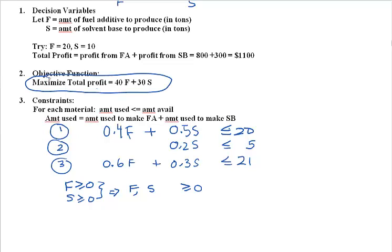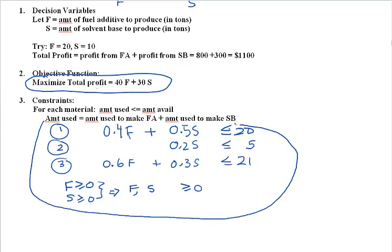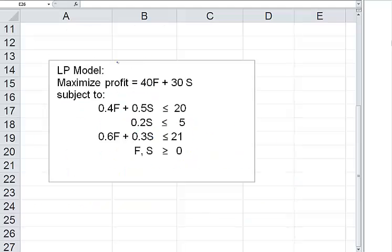So we have written down the objective and the constraints, and that is our linear programming model. Let me show you the completed version that appears in the Excel file. Here is the completed linear programming model. You can see we start with the word either maximize or minimize — this time we want to maximize.